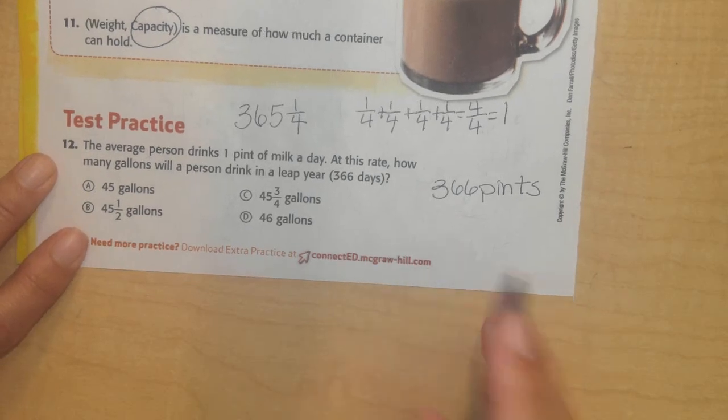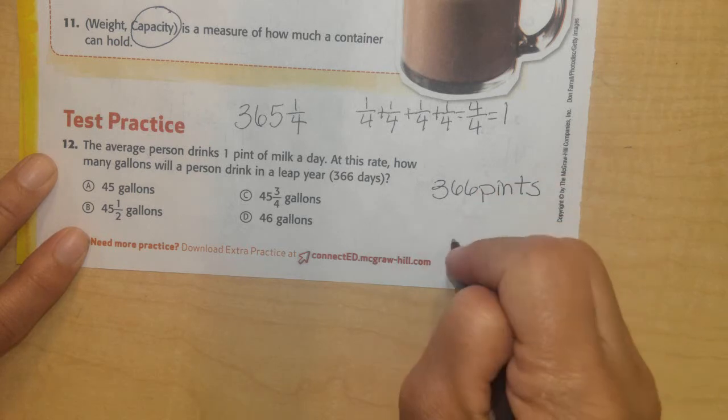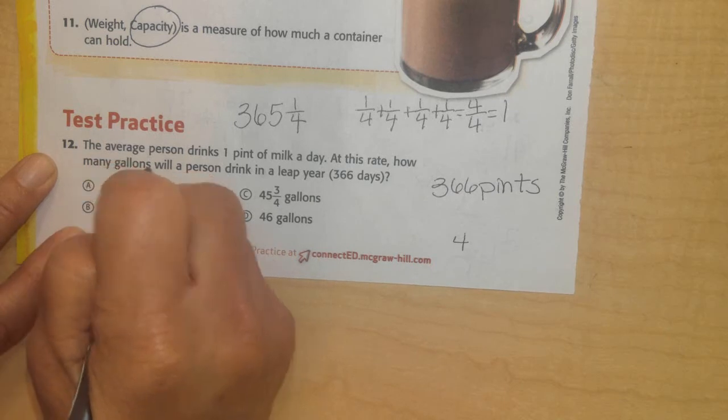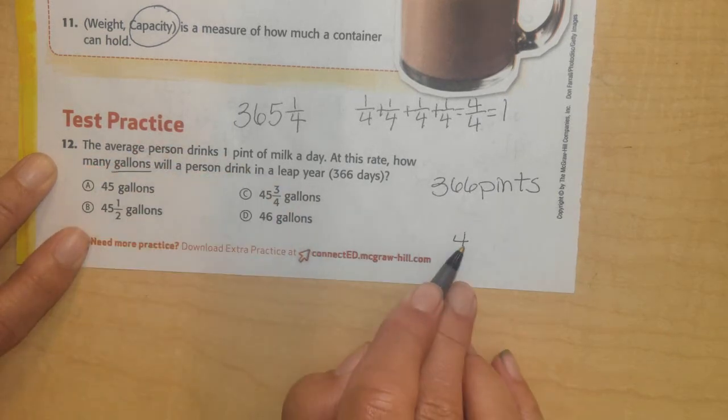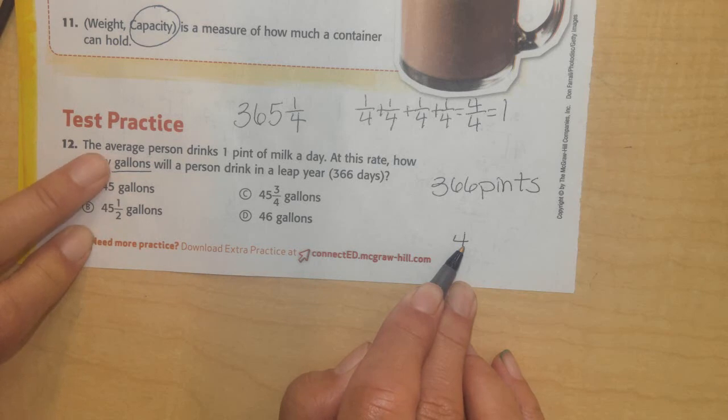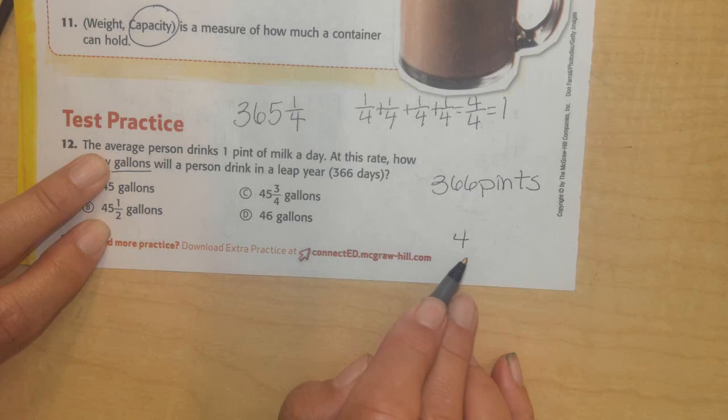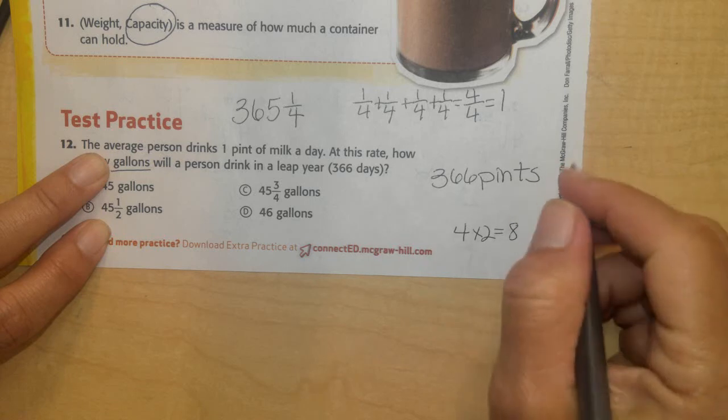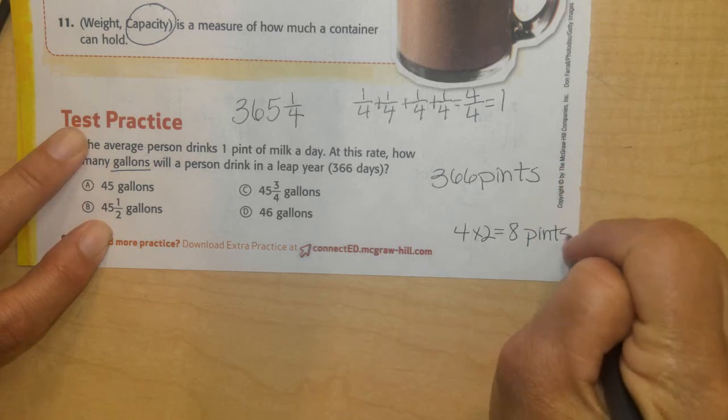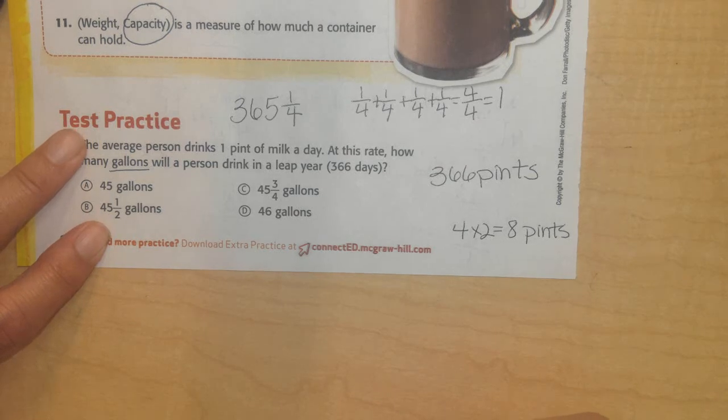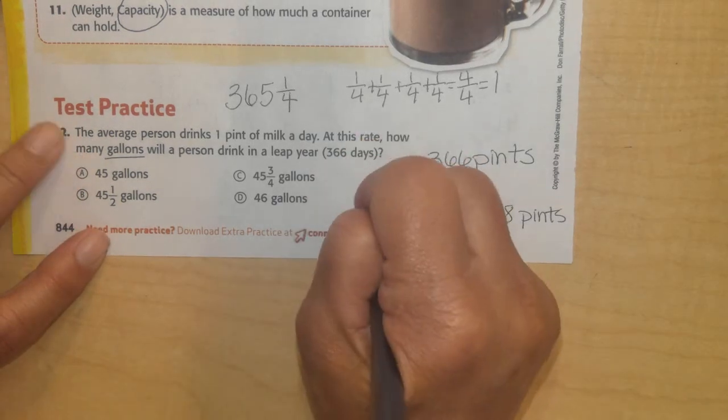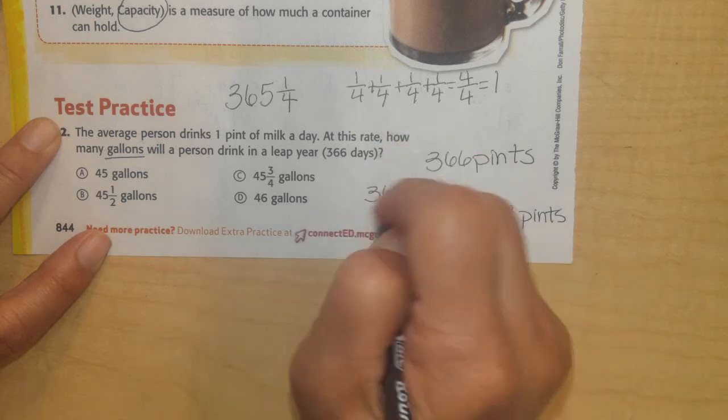So if I know there are four quarts in a gallon. I'm trying to figure out how many gallons of milk I drink. So there's four quarts in a gallon. And there's two pints in one quart. So I'd have two plus two plus two plus two or times two, which would be equal to eight pints in one gallon. So I'm going to take my 366 days, pints, and I'm going to divide it up by eight.